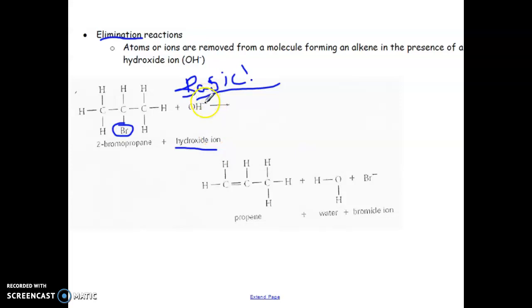So the question may not say, oh, 2-bromopropane is reacting with a hydroxide ion. It may simply say 2-bromopropane is added to a basic solution. And that should be enough for you to signalize that, you know, okay, there's a hydroxide ion present.